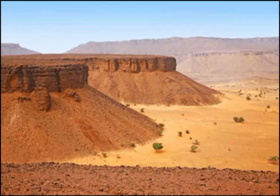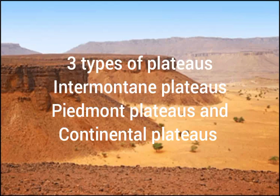Plateaus are mainly highlands. They are like mountains but they have got a flat top. There are three types of plateaus: intermountain plateaus, pediment or border plateaus, and continental plateaus.